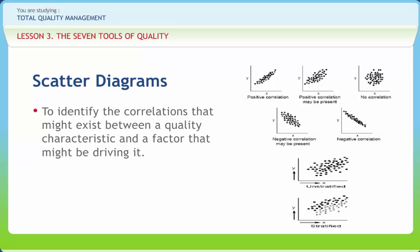How is it done? First decide which paired factors you want to examine. Both factors must be measurable on some incremental linear scale. Collect 30 to 100 paired data points. Find the highest and lowest value for both variables and draw the vertical Y and horizontal X axis of a graph. Then plot the data and title the diagram.